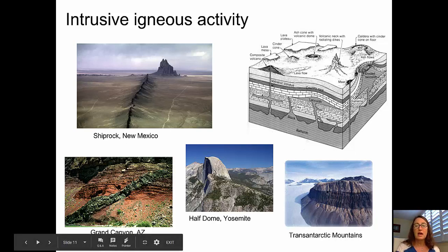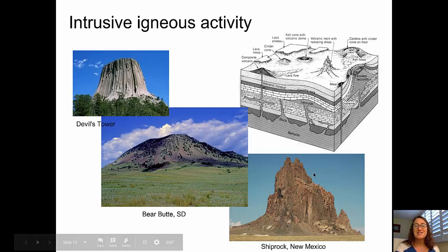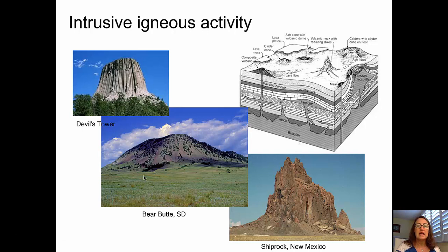From Antarctica, we have a sill — a dark-colored structure that intruded in between existing layers, making it a concordant feature parallel to existing structures. Three more features: Bear Butte in South Dakota is a laccolith, which forms when magma moves up towards the surface via what might become a dike, and when it reaches the boundary between two different sedimentary formations, it bulges those formations upward, fills the space in between, and cools and crystallizes into this pluton.